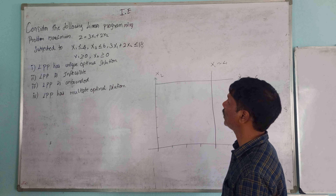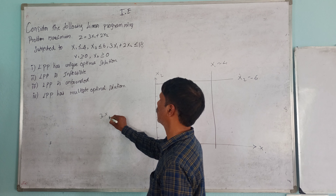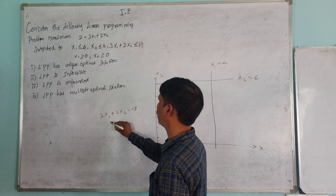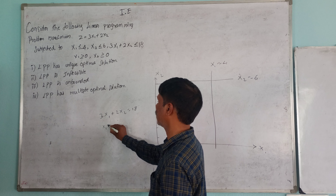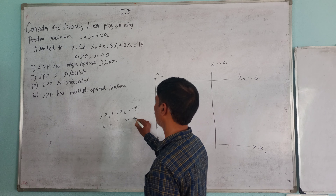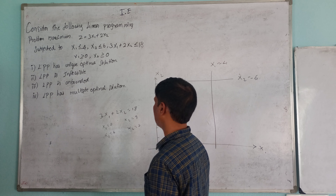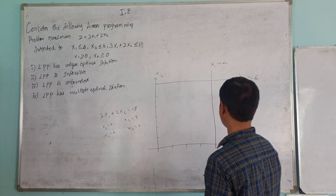For the constraint 3x1 plus 2x2 equal to 18: if x1 is 0, then x2 equals 9. If x2 is 0, then x1 equals 6. So we plot the line from (0, 9) to (6, 0).